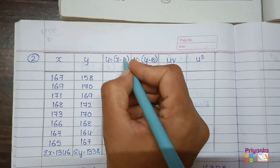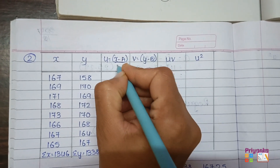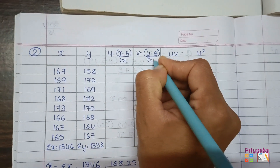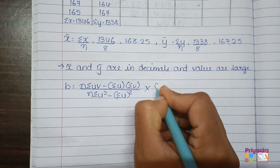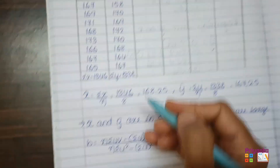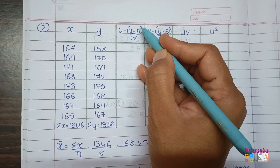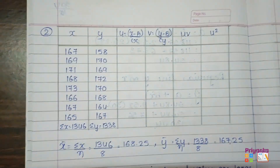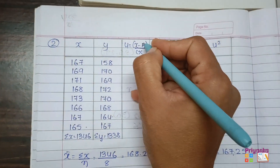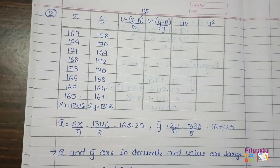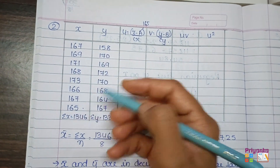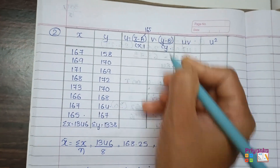Back to the formula: u = (x minus assumed mean) divided by cx, and v = (y minus b) divided by cy. Don't forget to introduce cy and cx. For the x column, the minimum value is 165, so the assumed mean a = 165, and cx = 1 since no numbers fit a common table.